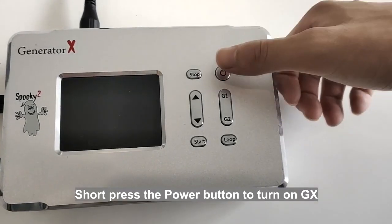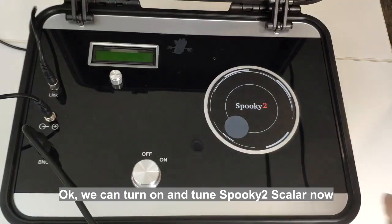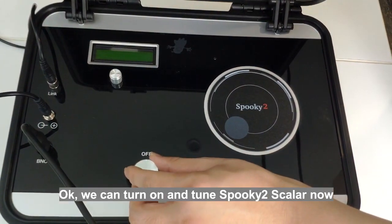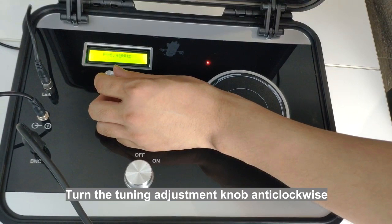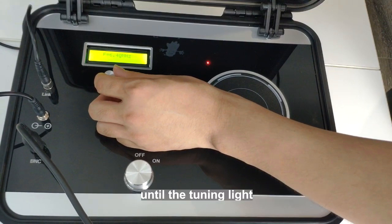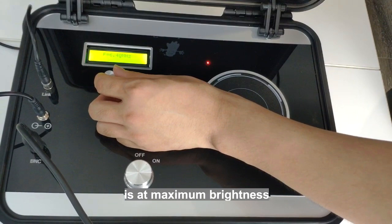Short press the power button to turn on GX. We can turn on and tune Spooky2 Scalar now. Turn the tuning adjustment knob anticlockwise until the tuning light beside the output coil is at maximum brightness.